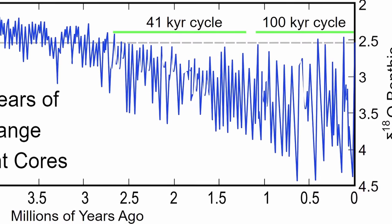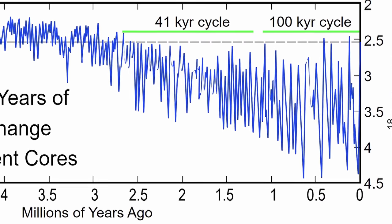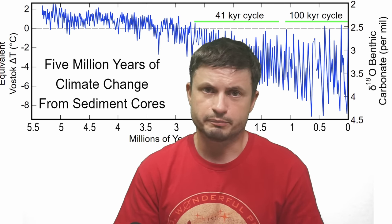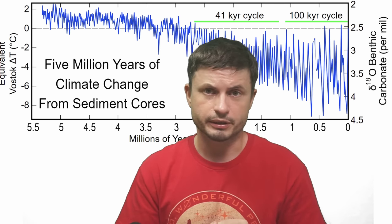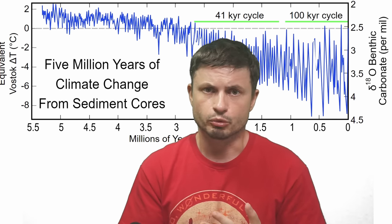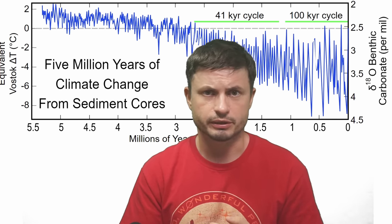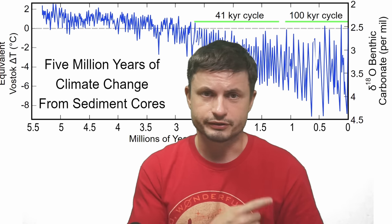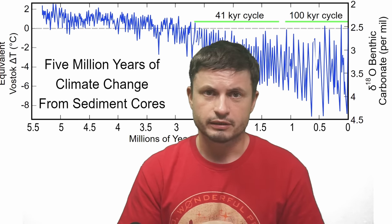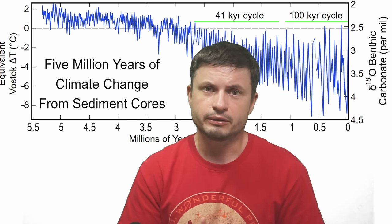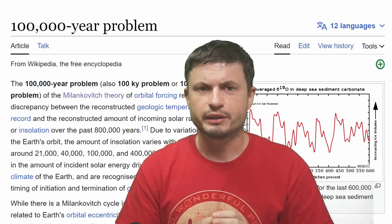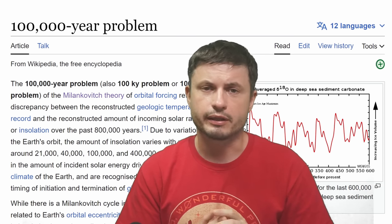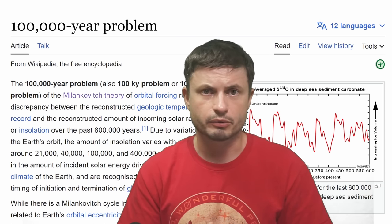Today we refer to these orbital cycles as Milankovitch cycles. The ice age is a pretty intriguing period in itself, but somewhere inside this graph there's actually another intriguing mystery — something we refer to as the 100,000-year problem.